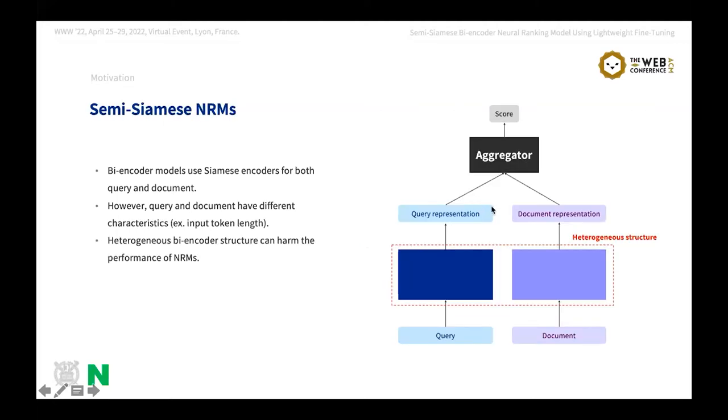To solve this query and document mismatch problem, we may try to use heterogeneous structure for the query and document. However, heterogeneous structure could harm the performance of the model because we think the encoder for a query should find out the pattern out of only a few query words. Therefore, we propose in our work semi-Siamese sparse encoder that can share the meaningful information in query and document and reflect the difference between query and document at the same time.